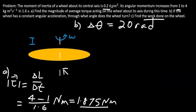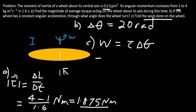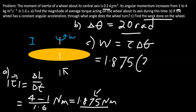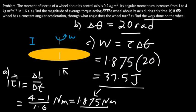Part C: Find the work done on the wheel. Work is done by the torque, given by torque times angular displacement: 1.875 N·m × 20 rad = 37.5 joules.